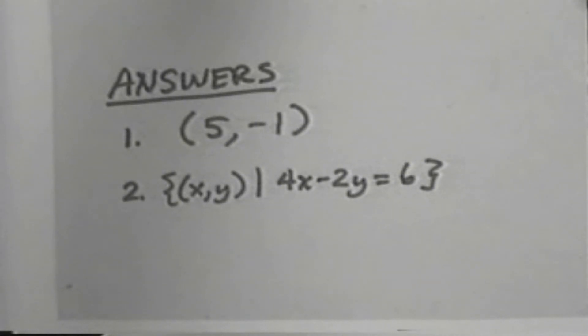For exercise 2, the set of all ordered pairs xy such that 4x subtract 2y equals 6.